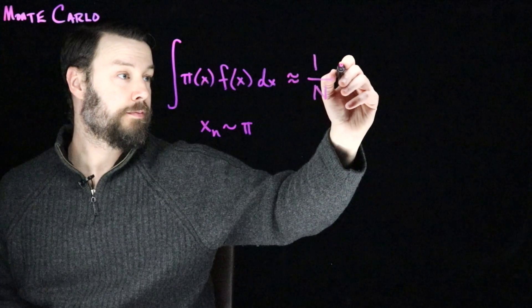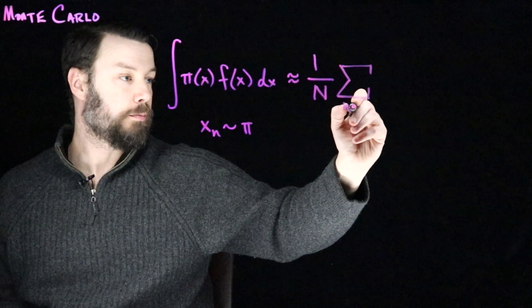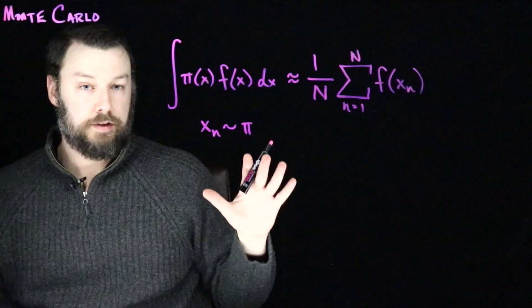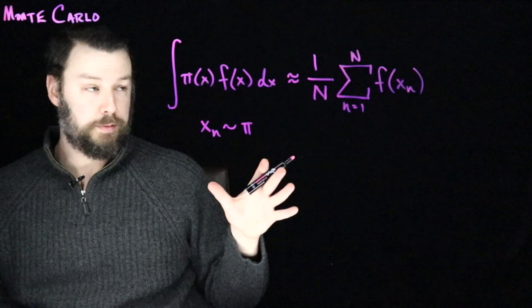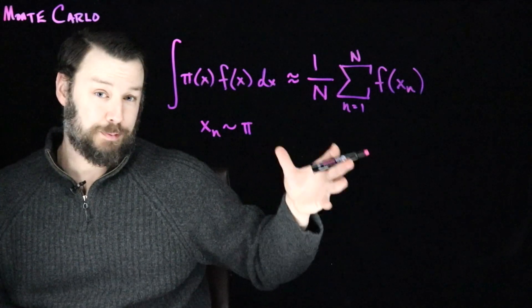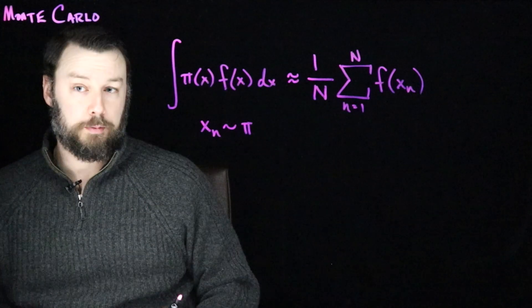Then I can approximate this with a sample average. So I'm drawing n of them, big N, from little n equals one to big N. This is what we call the Monte Carlo principle.